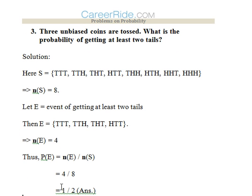Now the third question. 3 unbiased coins are tossed. What is the probability of getting at least 2 tails? So we need to find out every possible chance where at least 2 tails come up. So firstly we will go on and calculate n(S), which is the total sample space.